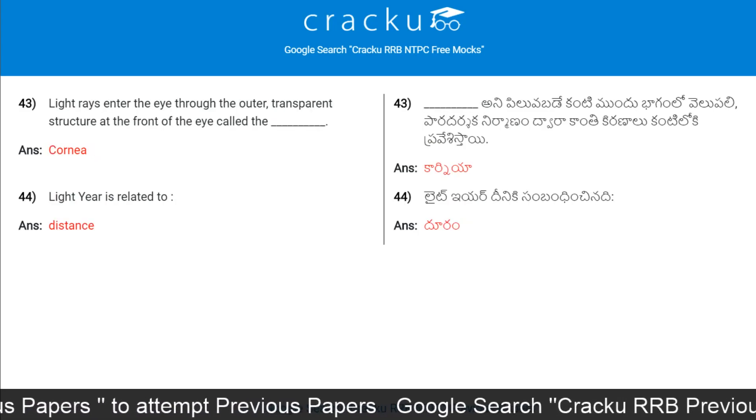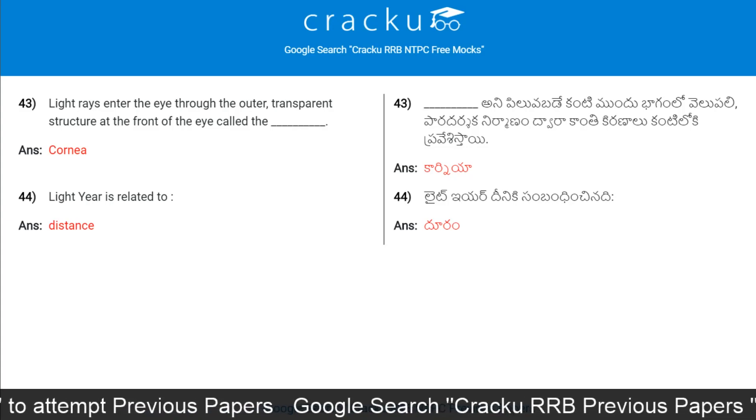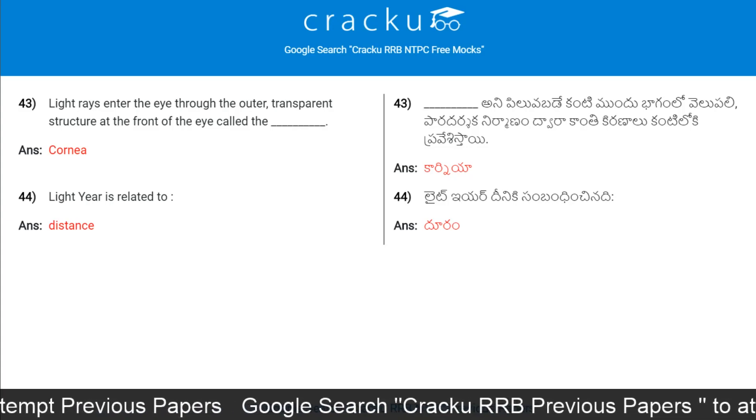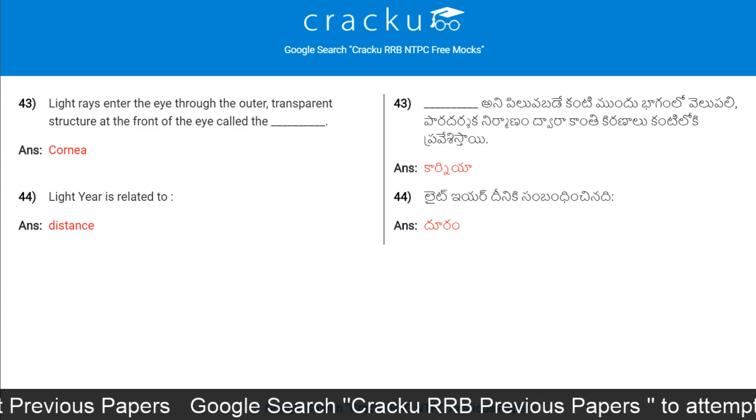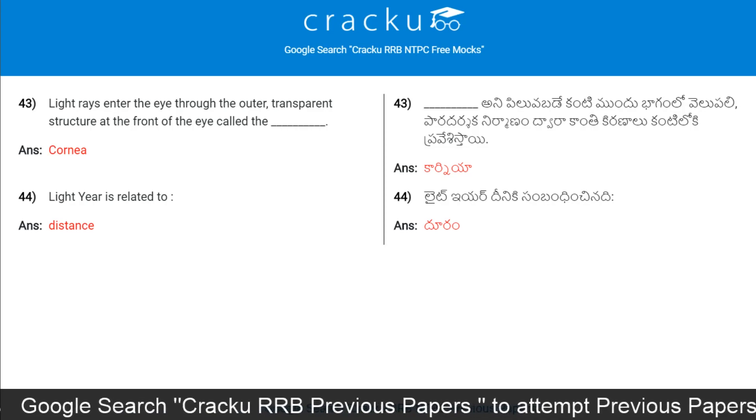Light rays enter the eye through the outer transparent structure at the front of the eye called the cornea.